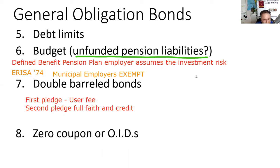Did the taxpayers of Salt Lake have to vote on the issuance of this bond? Yes they did, because there is stickiness to the taxpayers — 77% said yes. If there had been a deficit, property taxes of Salt Lake residents would have gone up by whatever mill rate was necessary to make good on the bonds. So if asked to classify this as to type, it's a GO bond.